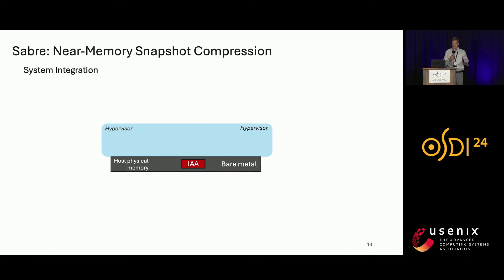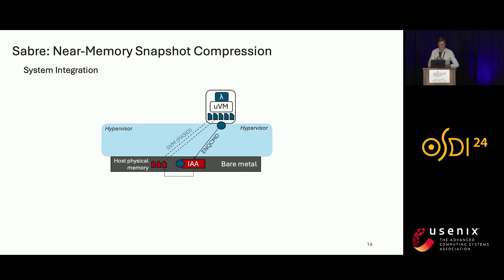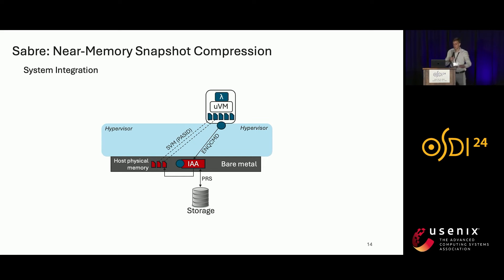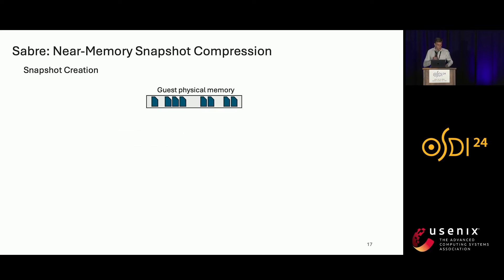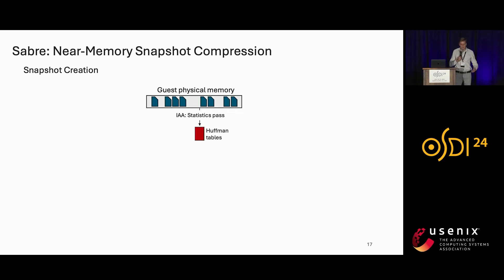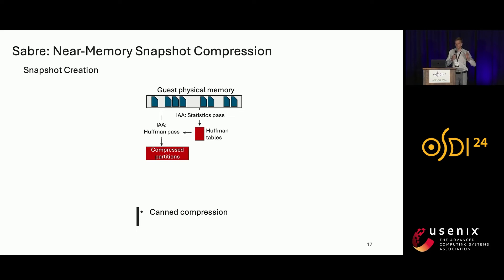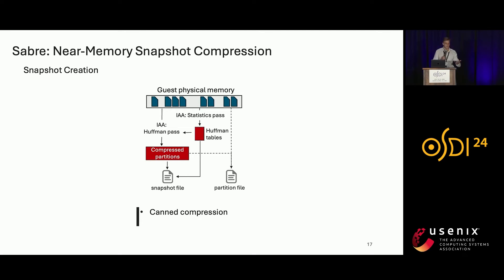This is how Sabre works: we have a bare metal server with IAA accelerators, we spin up a micro VM on top of a type 1 hypervisor, and the micro VMs access IAA through the enqueue command and shared virtual memory, while the accelerator accesses storage through the page request service. Snapshot creation is straightforward: IAA first runs a statistics pass, collecting statistics across all pages to be snapshotted and building Huffman tables. Then those same Huffman tables are used to compress all pages — this two-phase operation is called canned compression and is the best way to compress sparse pages. Compressed data goes to the snapshot file and metadata to the partition file.